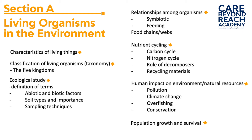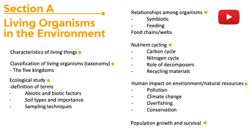You also need to know about special relationships, which include feeding relationships — food chains and food webs — as well as symbiotic relationships including mutualism, commensalism, and parasitism, and competition. You also need to cover nutrient cycling, which involves the carbon cycle, the nitrogen cycle, the challenges in recycling, and the benefits of recycling.